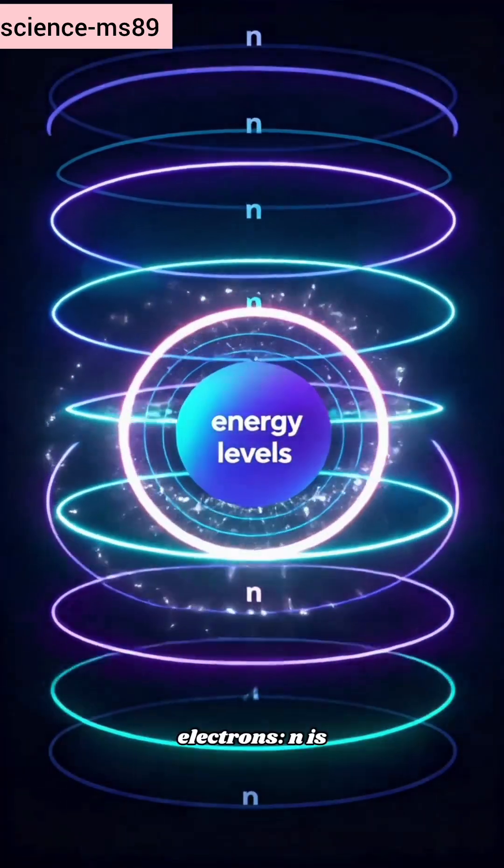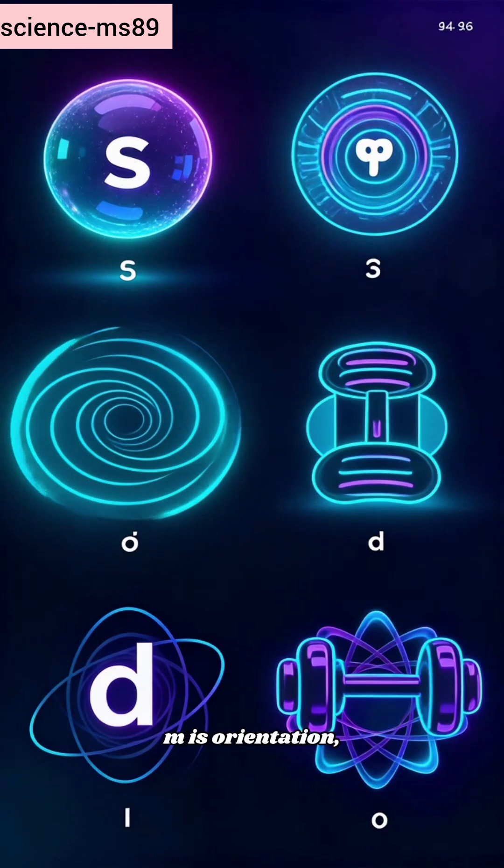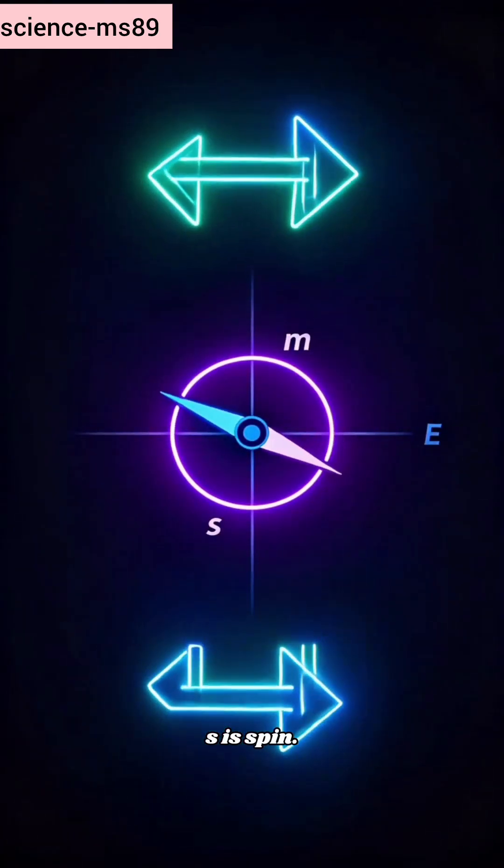Quantum numbers label electrons. N is energy. L is shape. M is orientation. S is spin.